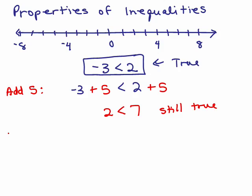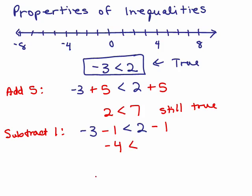What about if we subtracted some number? Let's try subtracting 1 from the original true statement. So I have negative 3 minus 1 from both sides. Negative 3 minus 1 is negative 4, and 2 minus 1 is 1, and negative 4 is less than 1. Is that still true? Yes, it's still true.